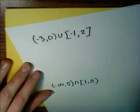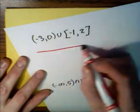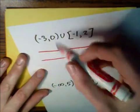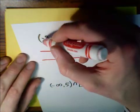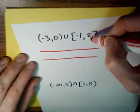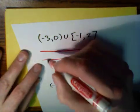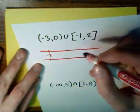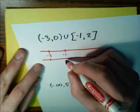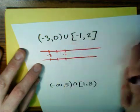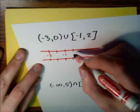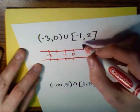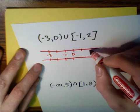We'll draw two aligned number lines. This is just a sketch. I need the numbers negative three, zero, negative one, and two. So this will be negative three, then negative two, negative one, zero, one, and two.